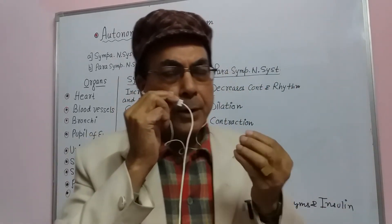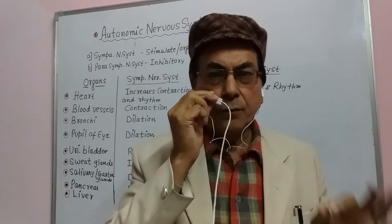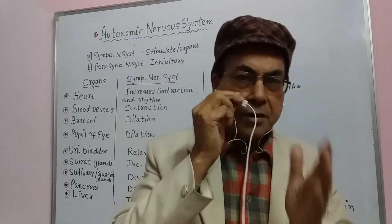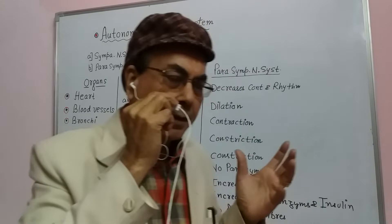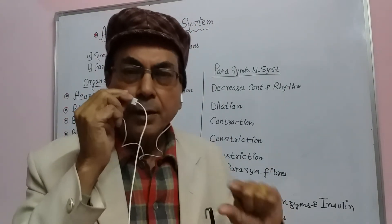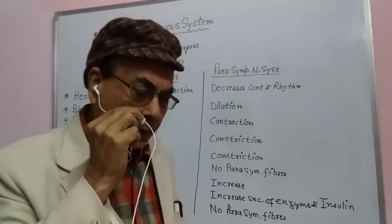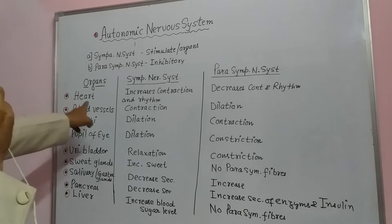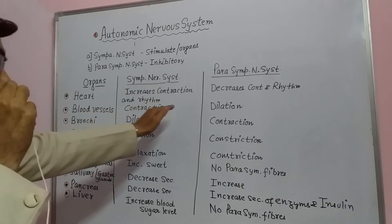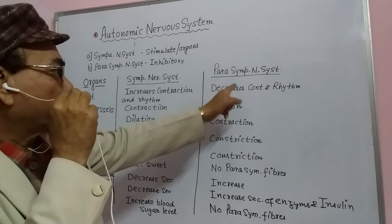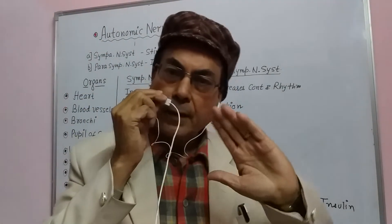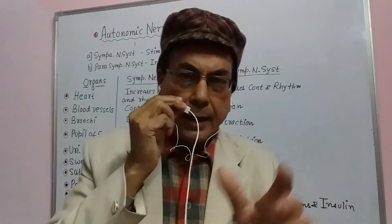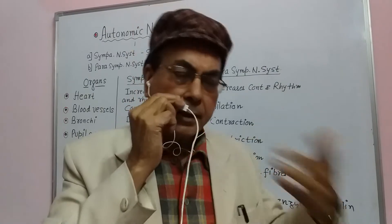We have brought some simple examples which will make all of you understand very clearly what is the role of the sympathetic and what is the role of the parasympathetic nervous system on the different organs of our body. Please look at the table. We have shown here the organ, the effect of the sympathetic nervous system, and the effect of the parasympathetic nervous system on that particular organ or gland in our body.